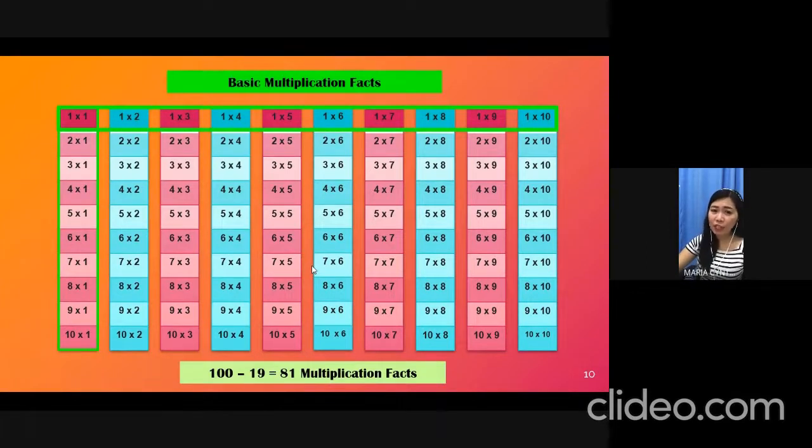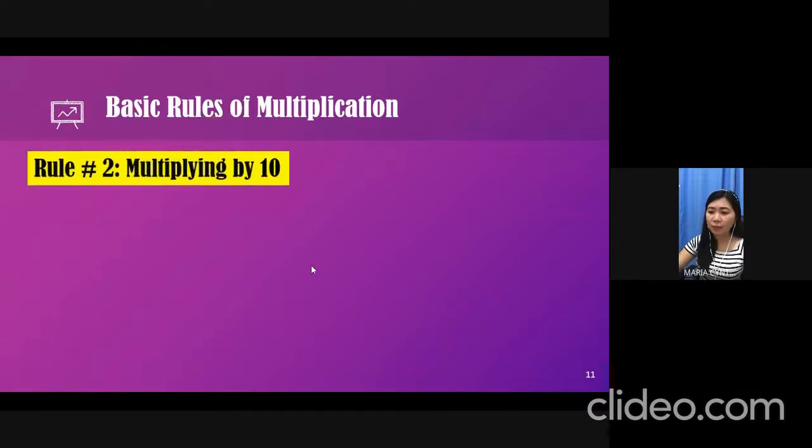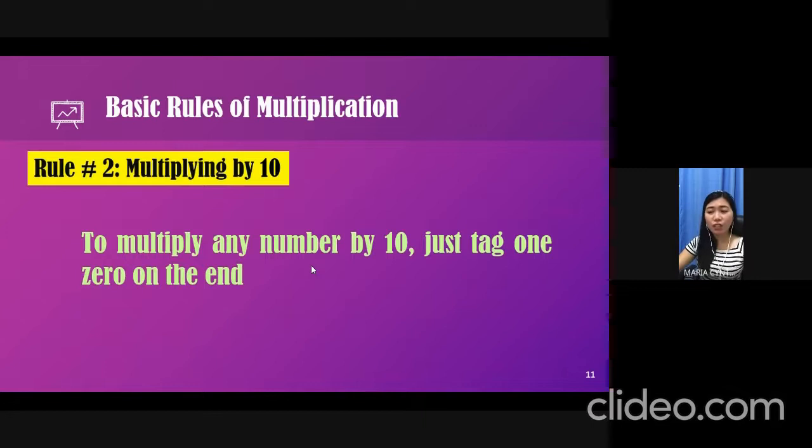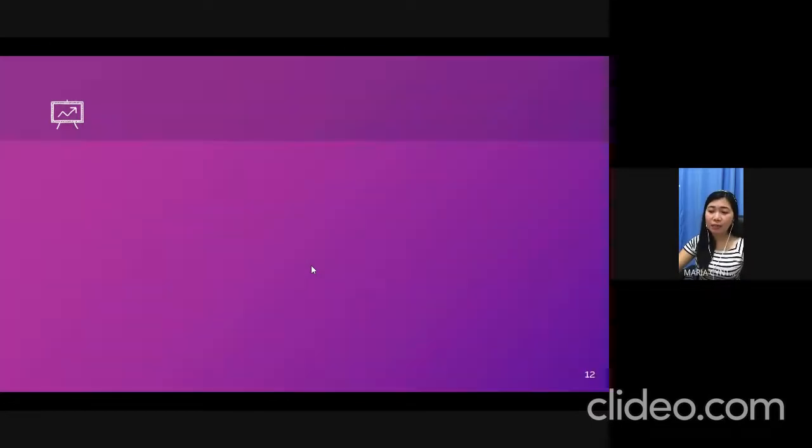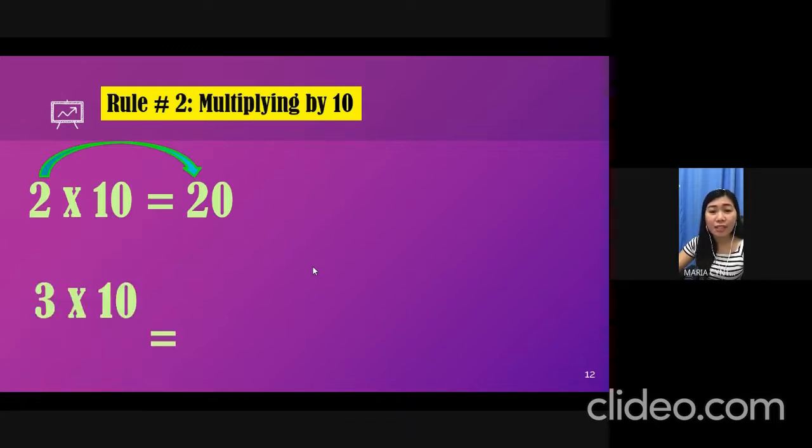Let's proceed to the second rule. This is on multiplying by 10. To multiply any number by 10, just tag 1, 0 on the end. For example, 2 times 10. Because remember, 2 times 1 is equal to 2, and then you tag 1, 0 on the end. That makes it 20. So, 2 times 10 is equivalent to 20.